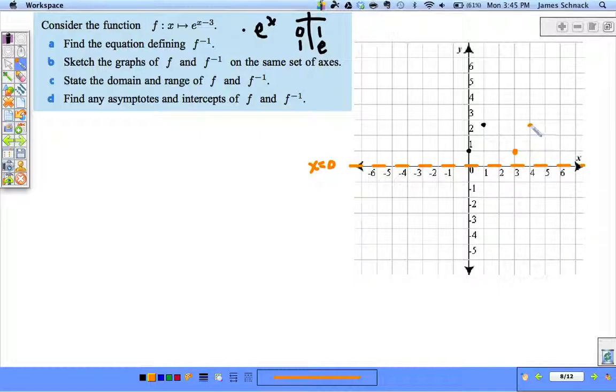This point that was (0,1) will become (3,1). This point that was (1,e) becomes (4,e), which is (4, 2.71). And my exponential equation looks like this for f of x.